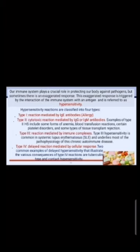Type 3 reaction is mediated by immune complexes. Type 3 hypersensitivity is common in systemic lupus erythematosis (SLE) and underlies most of the pathophysiology of this chronic autoimmune disease. Type 4 is a delayed reaction mediated by cellular response. Two common examples are tuberculin type and contact hypersensitivity.